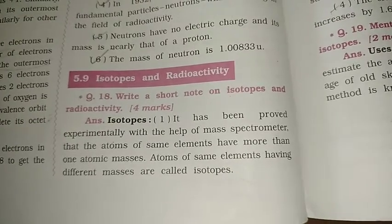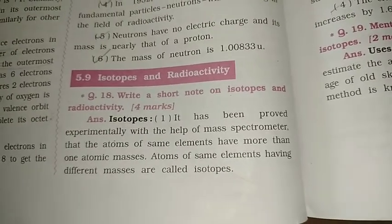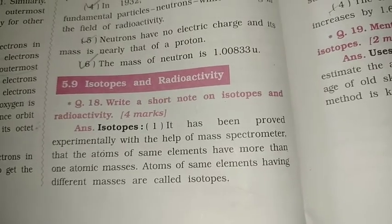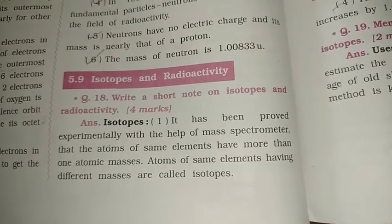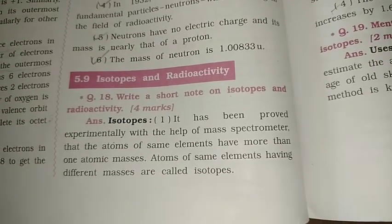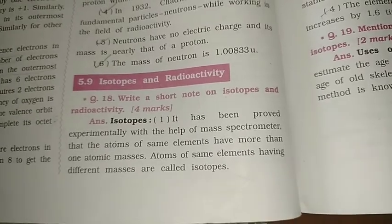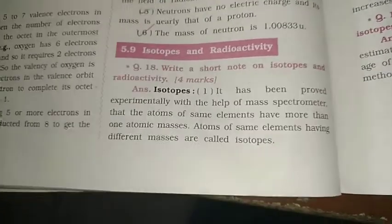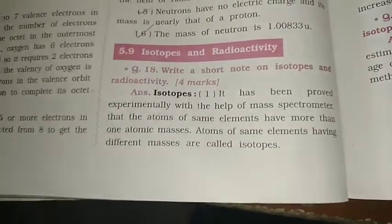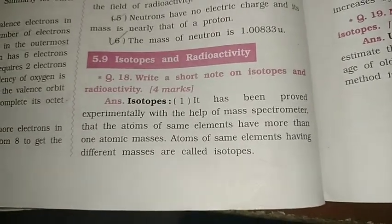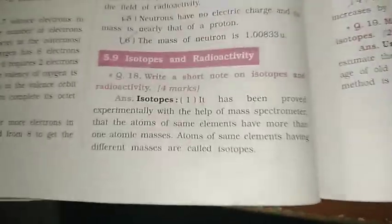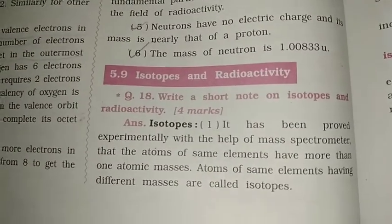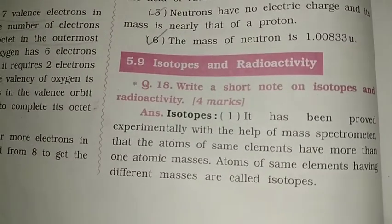So the first point: if we have the same type of element, there will be different masses within that element. This is what we call an isotope. The proton number is the same, but the neutron number is more than one — that is what we call an isotope.